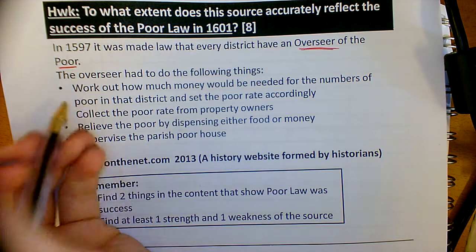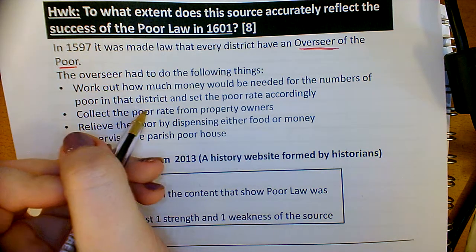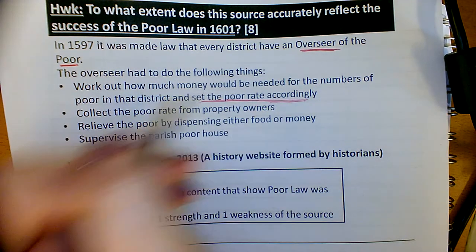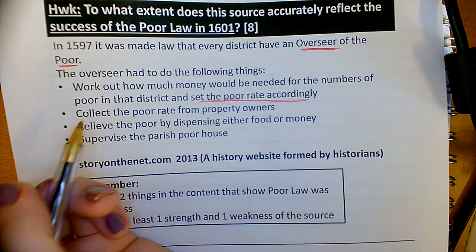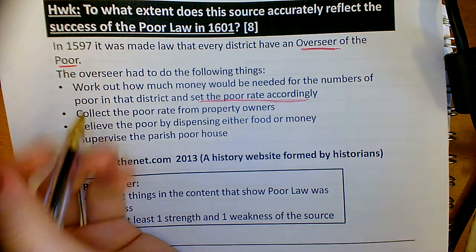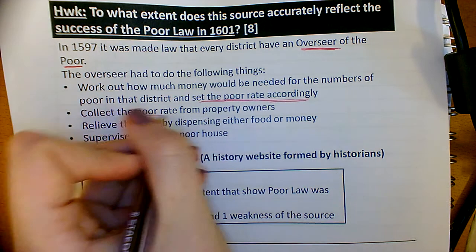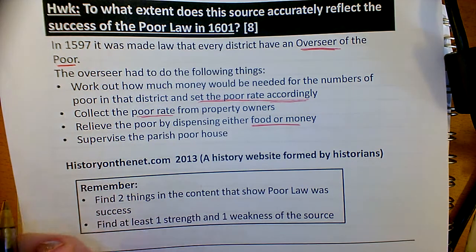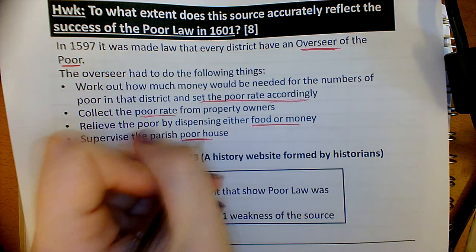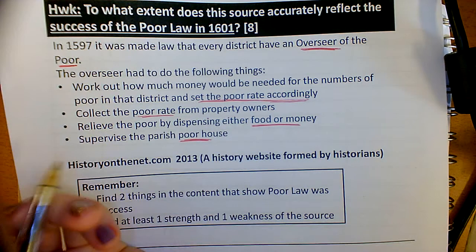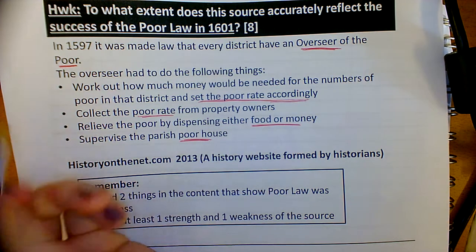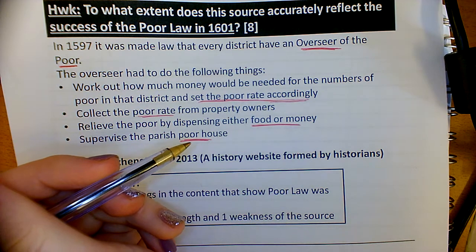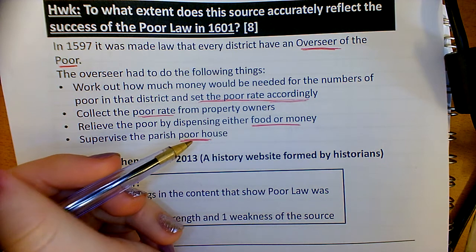It also says that they set a poor rate accordingly, and 'accordingly' would suggest that it can be changed according to who needs it most and when. The fact that they're collecting a poor rate means they're giving money. You could also have picked that there's money and food being given to the poor, and that there were poor houses for them to live in. Overall you just needed to pick two of those things, and that would form the content part of your COUP paragraph.